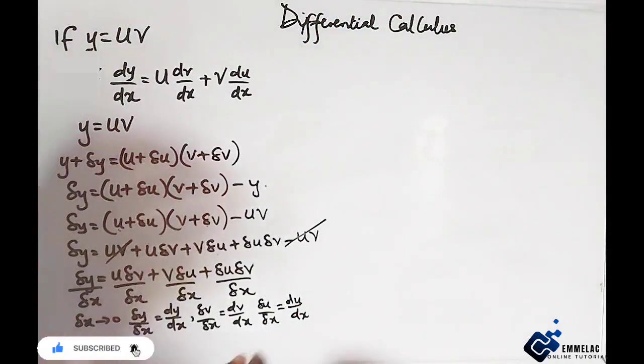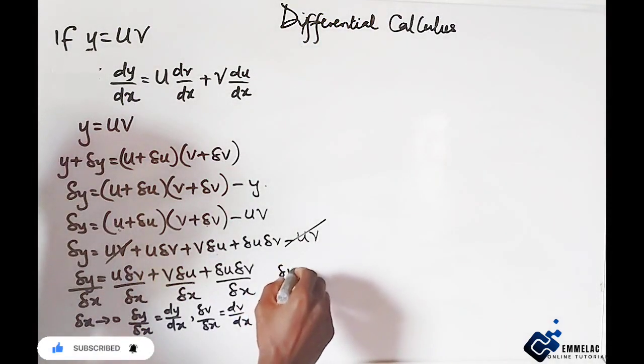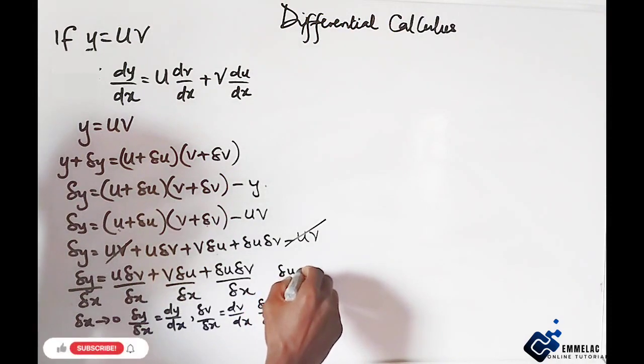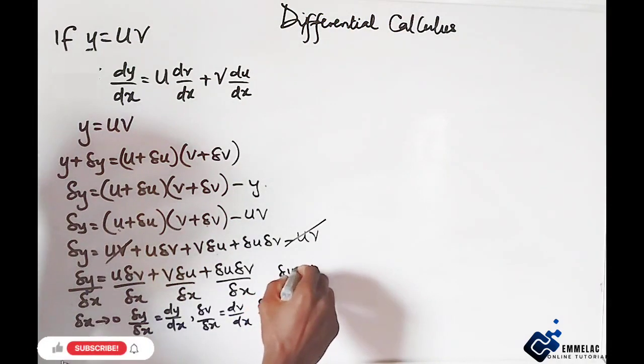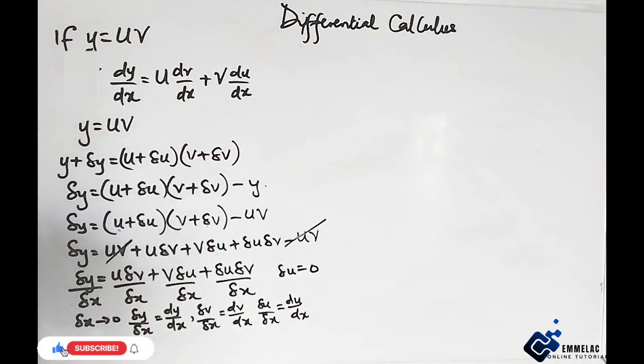At this point also, change in u becomes zero. Alright, so at this point here we can now see that dy/dx equals u...